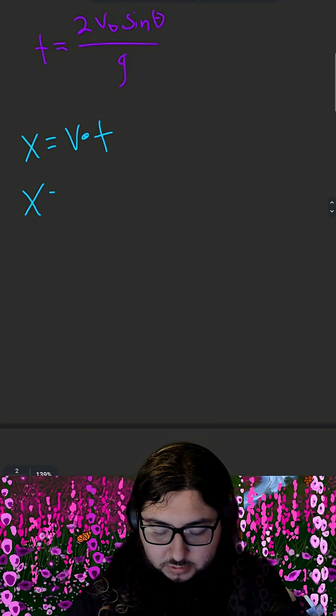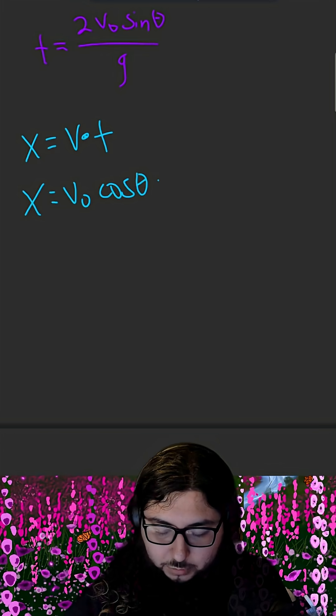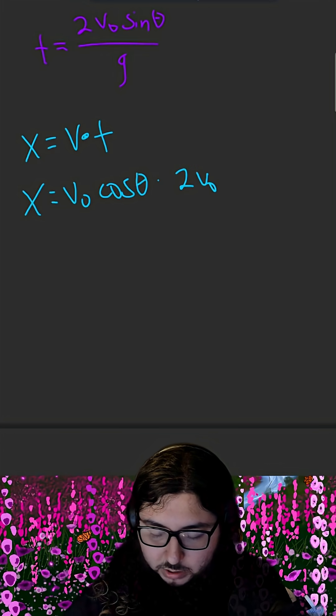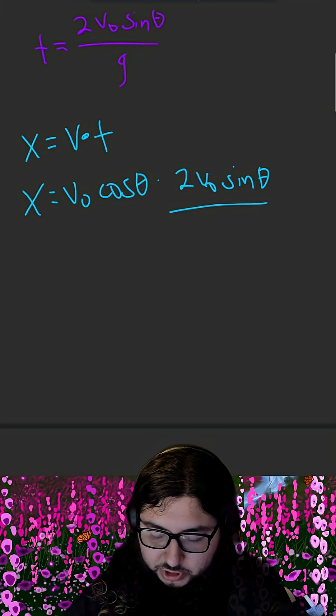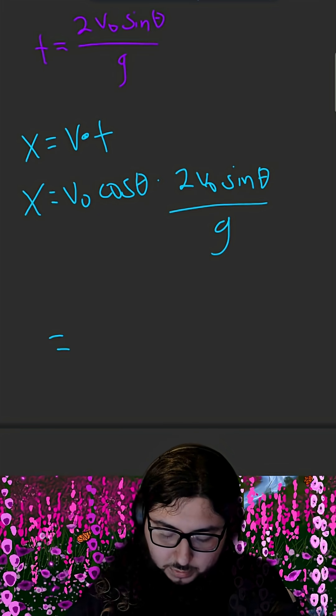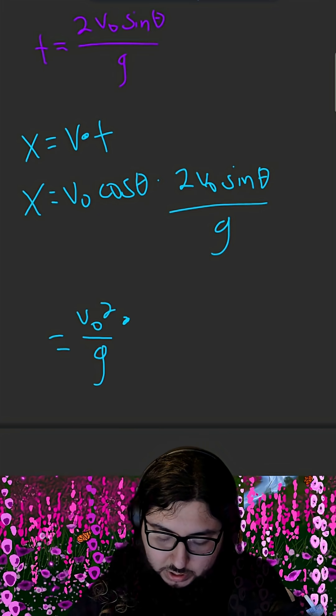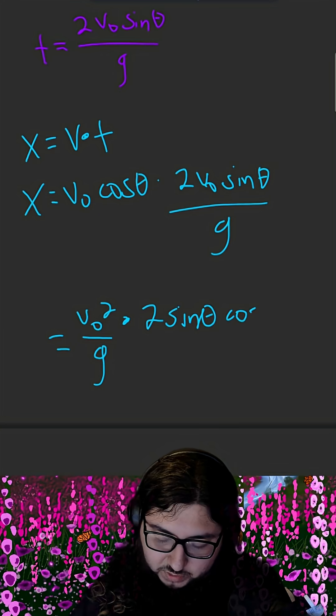So then x is equal to v naught cosine of theta times our expression for time, 2 v naught sine of theta over g. And we can rearrange this to be v naught squared over g times 2 sine of theta cosine of theta.